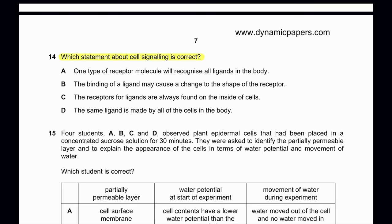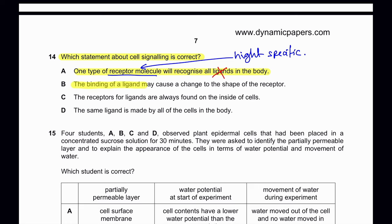Question 14: Which statement about cell signaling is correct? Option A — one type of receptor molecule will recognize all ligands — is wrong, as receptor molecules are highly specific. Option B — binding of a ligand may cause a change in the shape of the receptor — the receptor may bind around the ligand just like an enzyme, so B could be correct. Option C — receptors for ligands are always on the inside of cells — is wrong; receptors are found on the outside. Option D — the same ligand is made by all cells — is wrong; different cell types produce different ligands. So B is the correct answer.